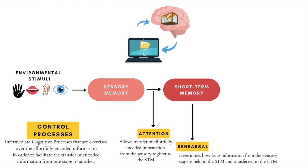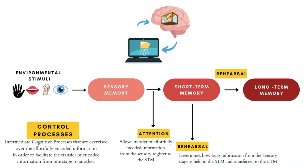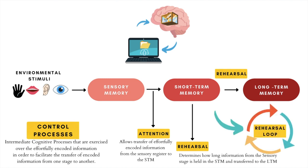This brings us to the next function of the control process of rehearsal, which is to maintain information in the STM long enough so that it can be transferred into the long-term memory storage unit. This continuous process of holding incoming encoded information in the STM long enough to transfer it to the LTM is subject to the rehearsal loop — simply going back and forth with the control process of rehearsal to transfer information from one stage to the other. The final control process of this model is retrieval.